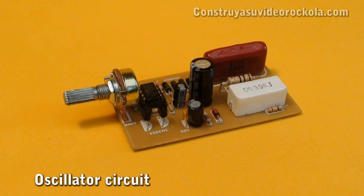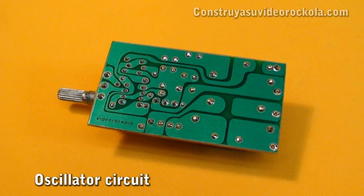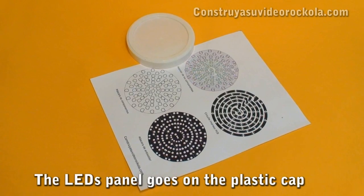Having built the oscillating circuit, we must make the panel of 80 LEDs. We will use the lid of an ice cream jar.